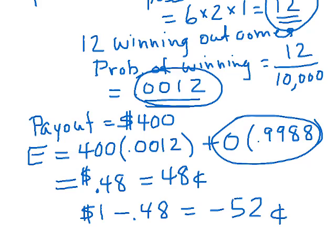So on average, if you play this game repeatedly, betting the way we bet this time, you're on average losing $0.52 every time you bet a dollar.